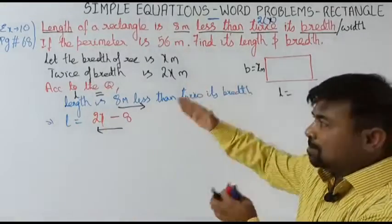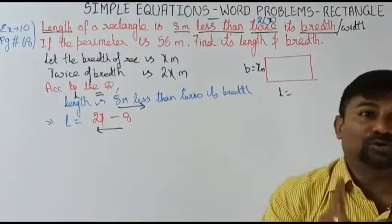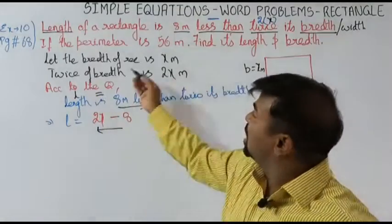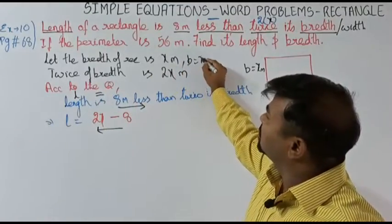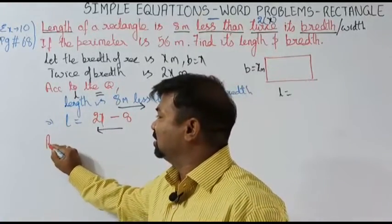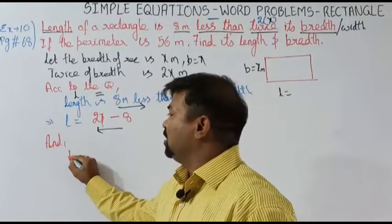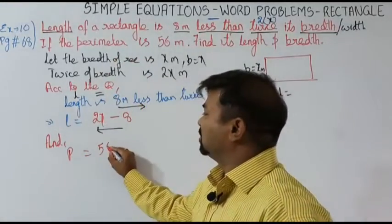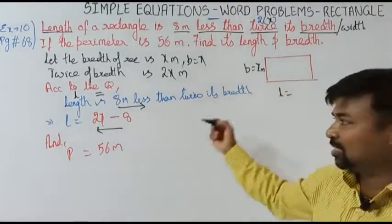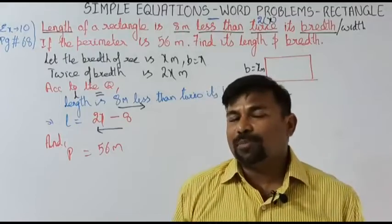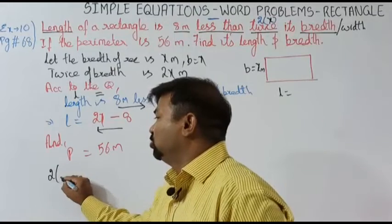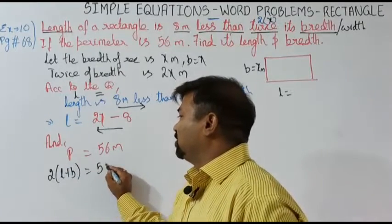English to mathematics is reversed — that is the thing to remember, that's where students mess up. So breadth equals x meters, length equals 2x minus 8. Now what else is given? Perimeter equals 56 meters. Perimeter means length of all four sides. The formula for perimeter of a rectangle: 2 into (l + b) equals 56 meters.